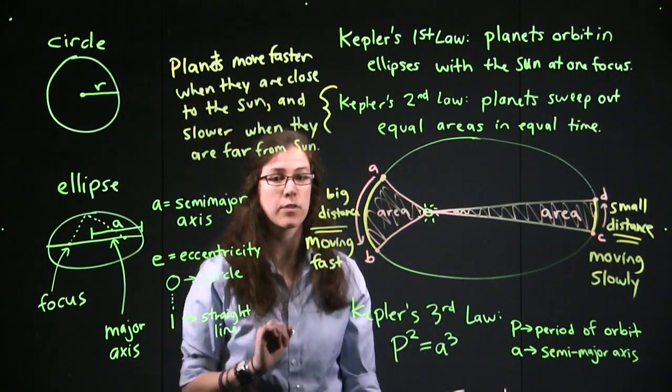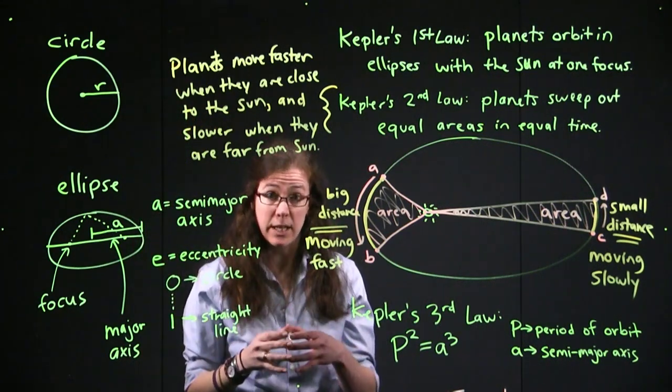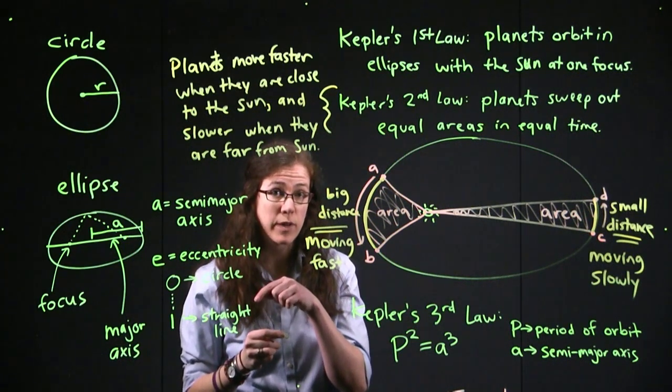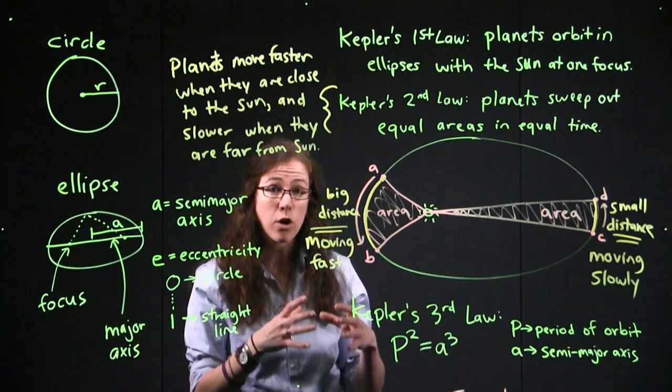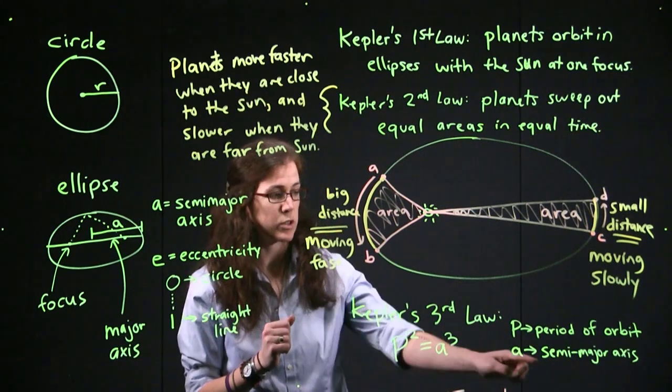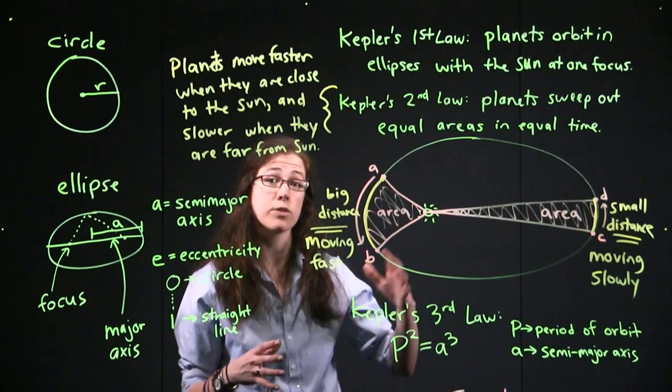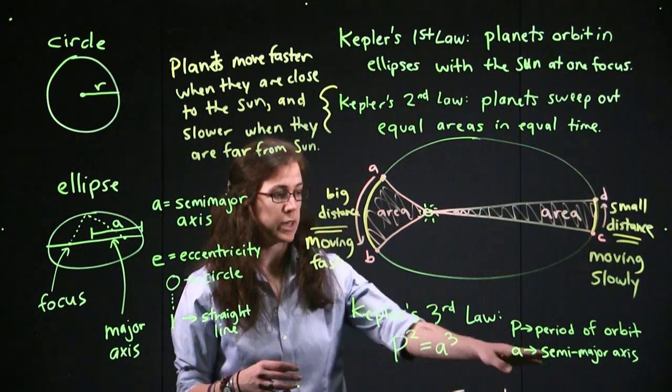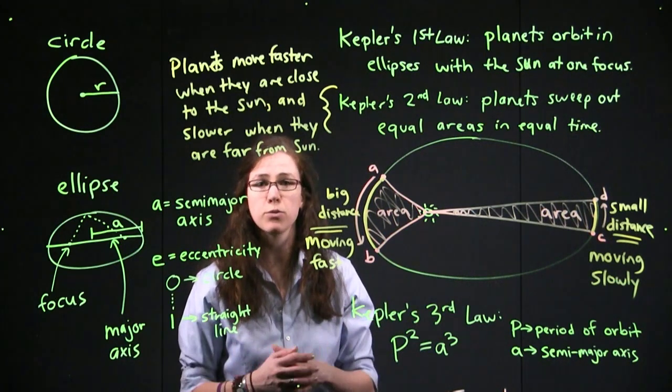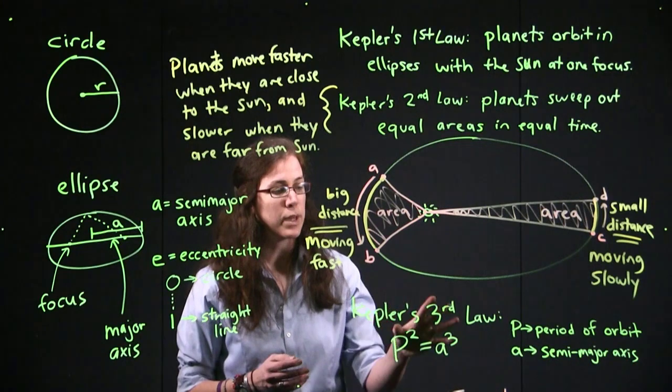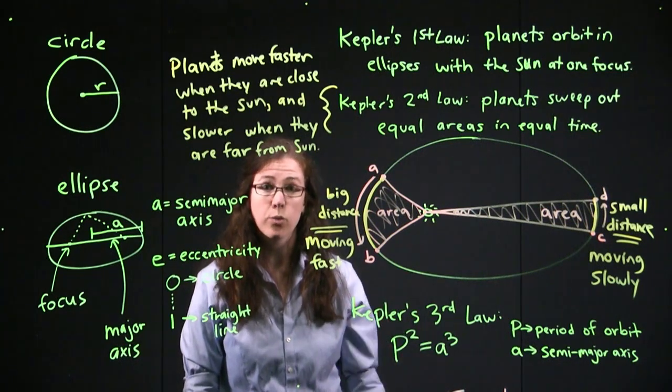It kind of gets us back to the same kind of idea, where Kepler's second law is telling us for a single planet, when it's closer to the sun it's moving fast, and when it's far from the sun it's moving slow. Kepler's third law is saying the planets that are already always closer to the sun, they have a smaller semi-major axis, a smaller ellipse, will actually be moving faster all of the time than the planets that are farther from the sun, which have a larger semi-major axis. So the Earth goes around faster around the sun all of the time, compared to Mars or Jupiter, for example. But it still gets us back to the same kind of idea, that planets move faster when they're close to the sun, and slower when they're farther away.